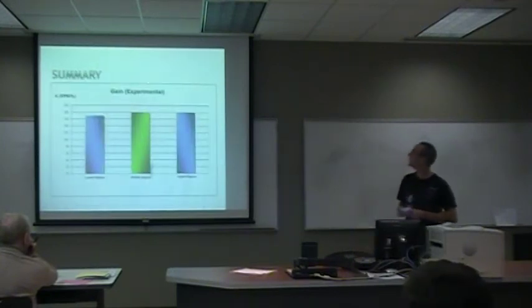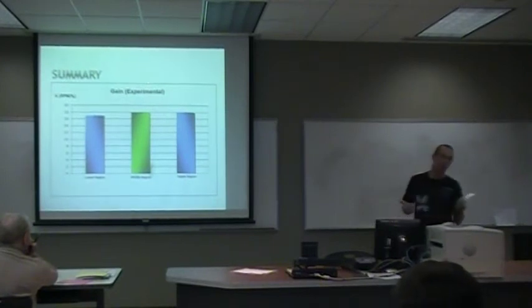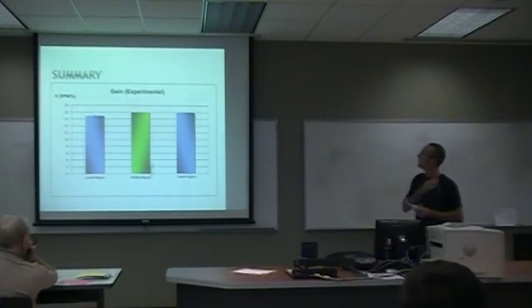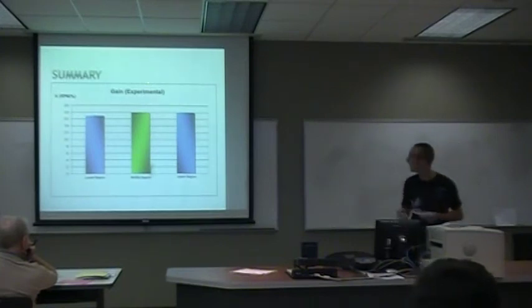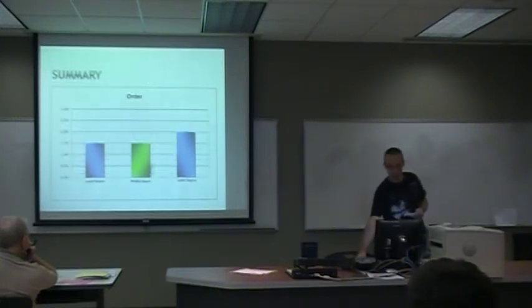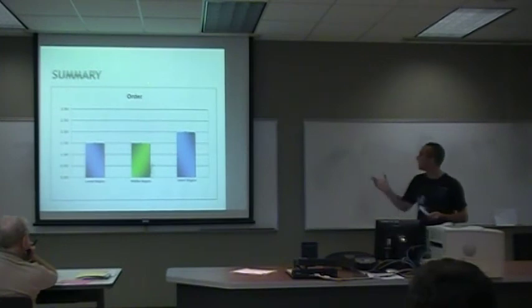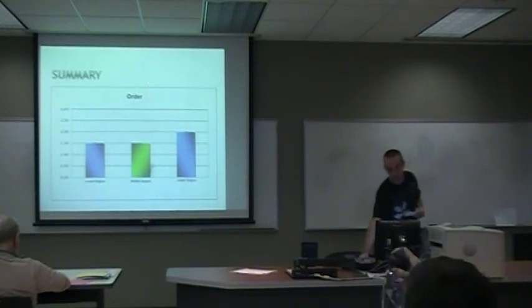For a summary, this is the experimental gain, which is lower for the lower region than the middle and the upper, with 17.4 for the lower and 17.75 for the upper and the middle. The order is 1.5 for the lower and the middle and 2 for the upper.